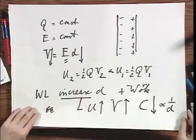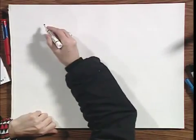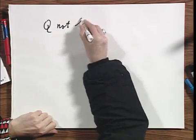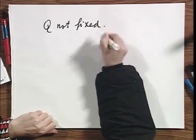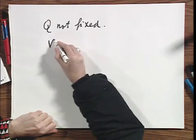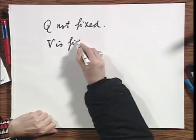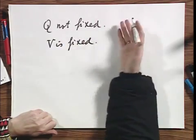Now the situation changes dramatically. Because now I'm going to attach a battery. Now when I attach a battery, Q is not fixed anymore. The only thing that is now fixed is the potential difference. So, it's a very different situation. Q is not fixed with the battery. But now V is fixed. The potential difference between the plates cannot change.